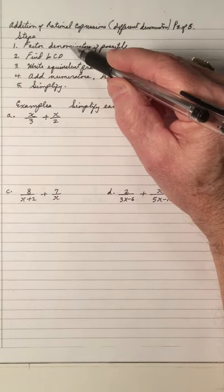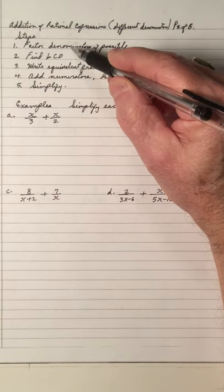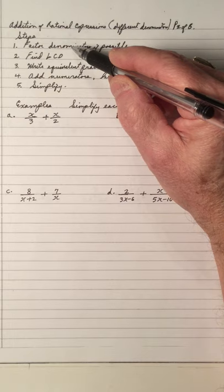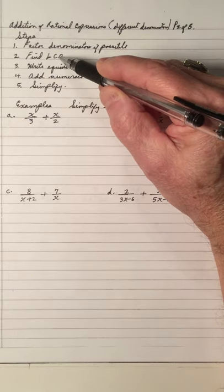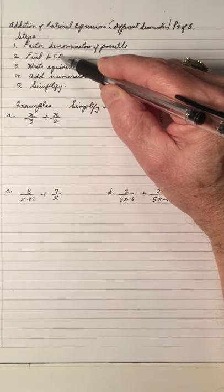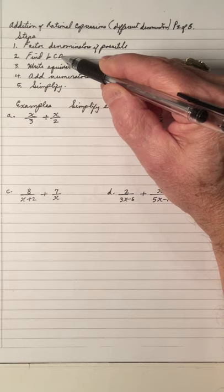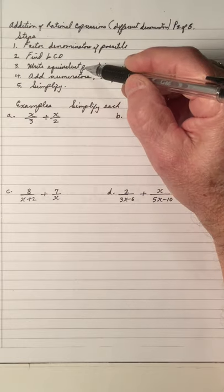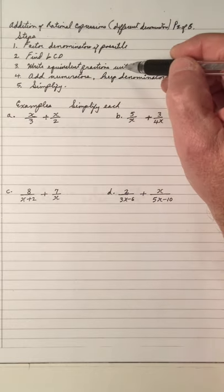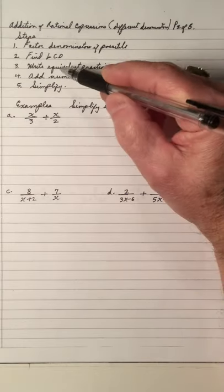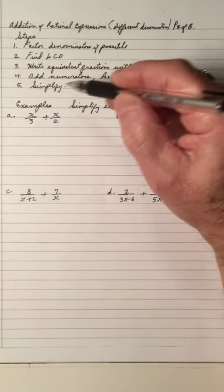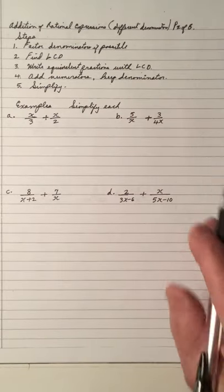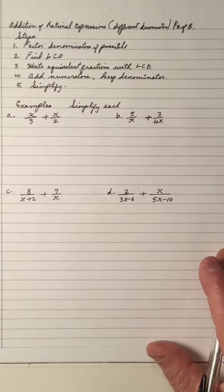Again, factor denominators — because if you don't, you won't be able to find what the LCD is. Finding the LCD makes it easier. Then write equivalent fractions with the LCD, add the numerators, keep the denominator, and simplify. Let's do some examples.